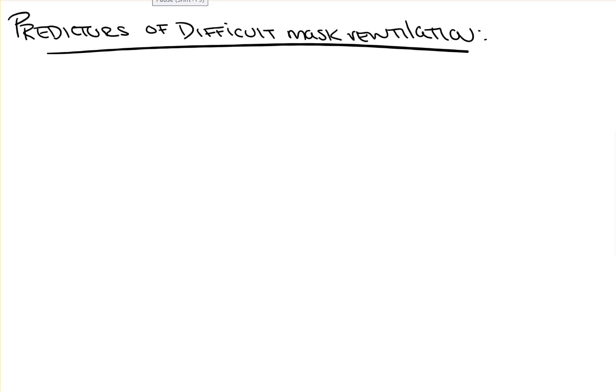Hi, everyone. In this video from Count Backwards from 10, we're going to take a look at the factors that may predict difficulty in mask ventilation. This is important because, as I tell all medical students and residents, even if you can't intubate somebody, you can always mask ventilate them and wait for them to wake up. But if you can't mask ventilate, then you're in trouble. Recognizing which patients could pose potential problems with mask ventilation and being able to identify them is extremely important in the world of anesthesia.